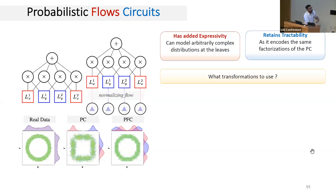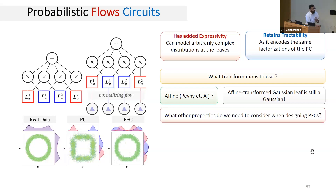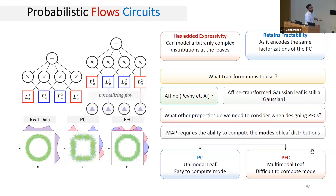Since flow transformations are restricted to the leaves, not all transformations yield the same added expressivity. For example, the invertible affine transformations proposed in the SPTN work don't help, because compositions of affine transformations are still affine, so an affine-transformed Gaussian leaf is still Gaussian. More expressive transformations are needed. At the same time, there are design principles specific to circuit-tailored flows — for example, MAP inference requires computing the modes of leaf distributions tractably, which is more challenging with complex leaf distributions.